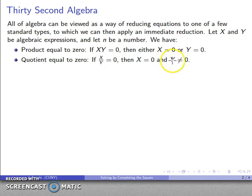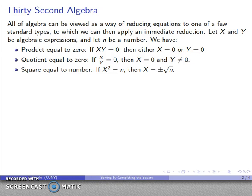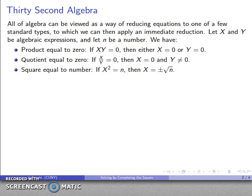Importantly, the denominator expression can never be equal to zero. We also have square equal to number: if the square of an expression equals some number, then the expression itself is going to be plus or minus the square root of that number.